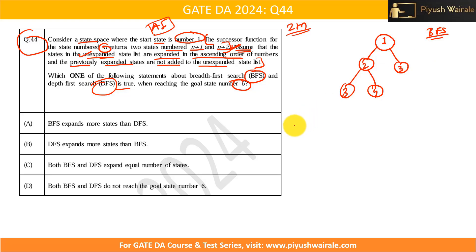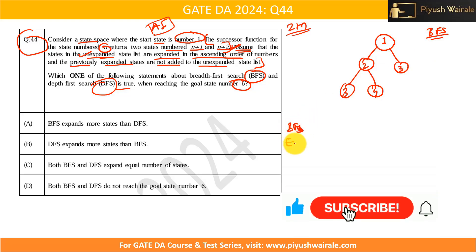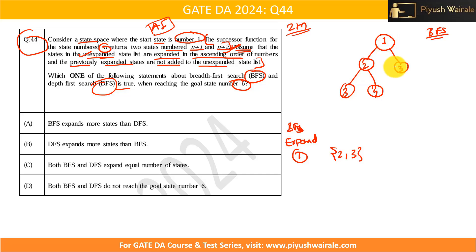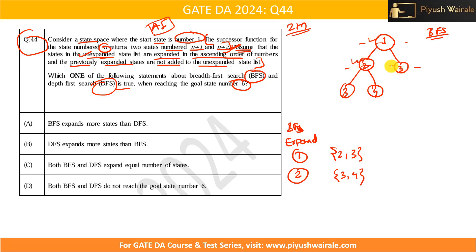Let's apply BFS first. I expand node 1 and get 2 and 3. In ascending order, I explore 2 next. Expanding 2 gives me 3 and 4. Since BFS goes level by level, I then explore node 3 from the same level, which gives me 4 and 5. Now I have explored both nodes in that level.